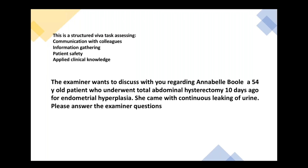If the fistula persists after the conservative period and requires surgical repair, this can be done via vaginal or abdominal route depending on the size and site of the fistula. After repair, the patient is catheterized again for at least three weeks. Before removing the catheter and performing a trial without catheter, we repeat retrograde cystography to confirm complete healing, and then the catheter can be removed.